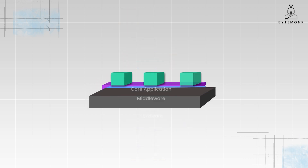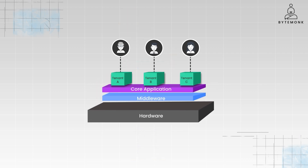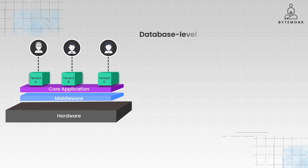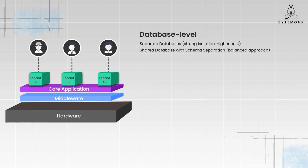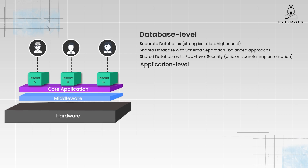Data isolation is critical in a multi-tenant environment because any security breach could potentially expose the data of multiple tenants, leading to severe consequences. Explain the different approaches you can take at the database level — maybe each tenant gets their own database, or perhaps you'll share a database but keep everyone's data in separate sections, or even use clever access controls. And don't forget about the application level itself — build in safeguards to prevent any data leaks.